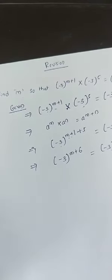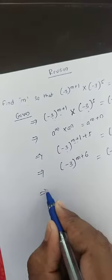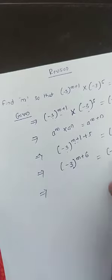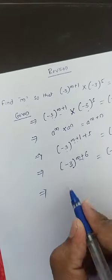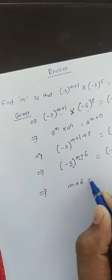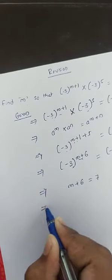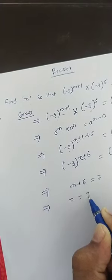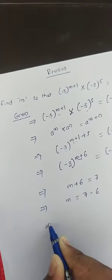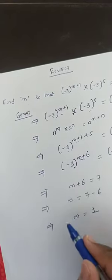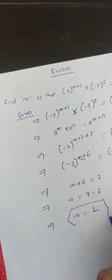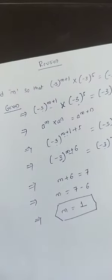Now, both sides have powers with the same base, different from 1 and -1, so their exponents must be equal. Just equate the powers: m + 6 = 7. So m = 7 - 6, which gives m = 1. I hope you understood this. That is, m = 1.